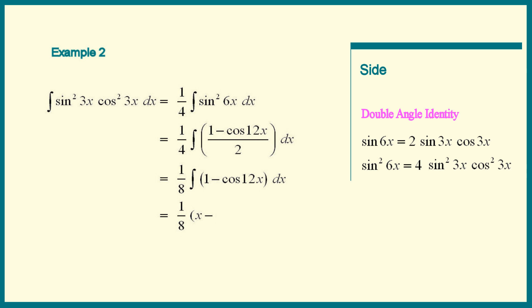Integrate 1, we get x. Integrate cosine 12x. Write down sine 12x and work backwards by differentiating. The derivative of sine 12x is cosine 12x times 12.